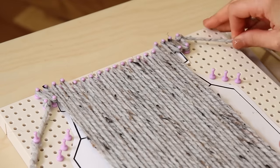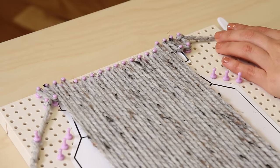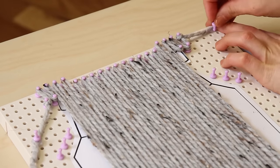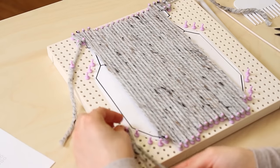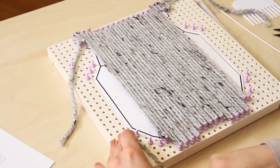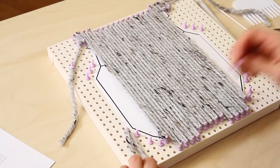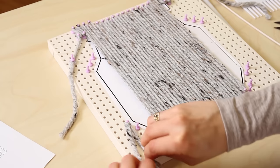If you want to secure your yarn ends, just add an extra peg to keep the yarn away from the working area. Next, the left wing will be warped making sure to end on a peg from the left ear tuft. It's okay to have two wraps on one peg.